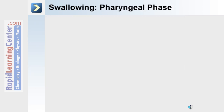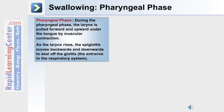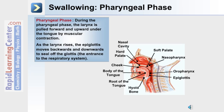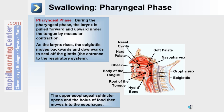The second phase of swallowing is the pharyngeal phase. During this phase, the larynx is pulled forward and upward under the tongue by muscular action. As the larynx rises, the epiglottis moves backwards and downwards to seal off the glottis. The upper esophageal sphincter opens, and the bolus of food then moves into the esophagus.